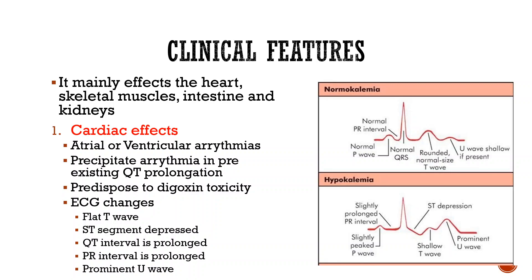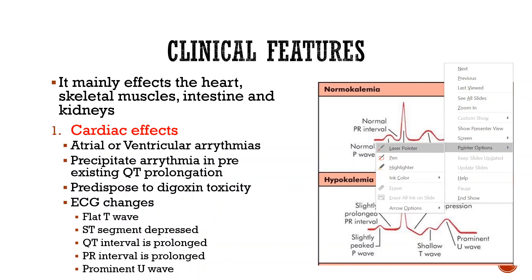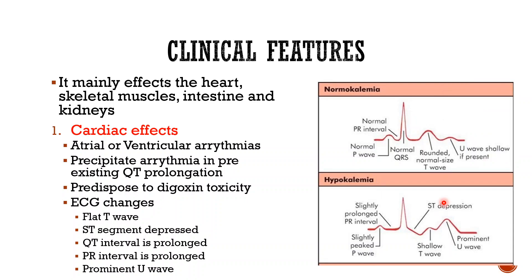ECG changes are very important in hypokalemia. These include: flat T wave, ST segment depression, QT prolongation, prolonged PR interval, and prominent U wave. One way of remembering them is that 'hypo' means low or goes down — so the T wave becomes shallow or flat, and the ST segment is depressed.